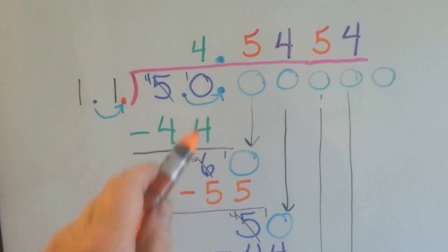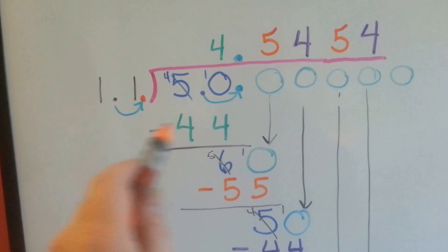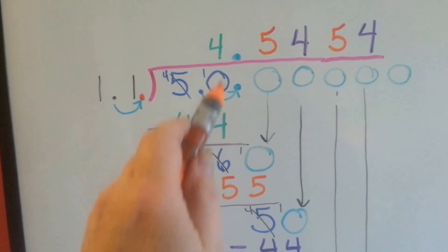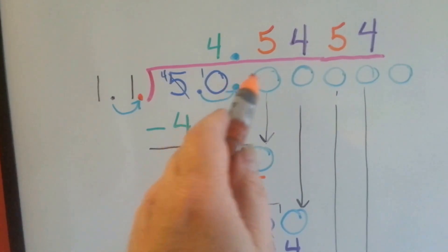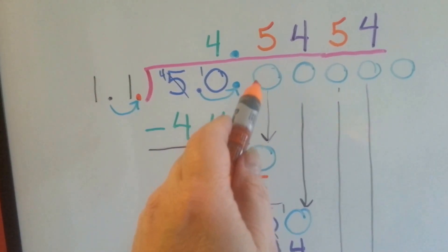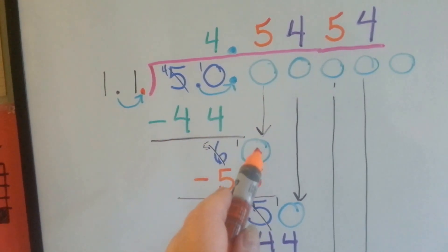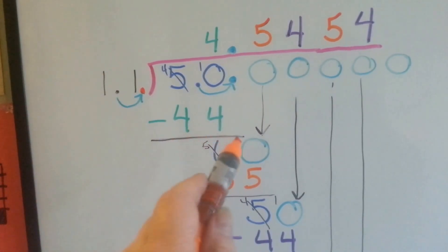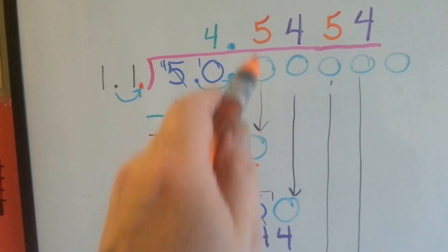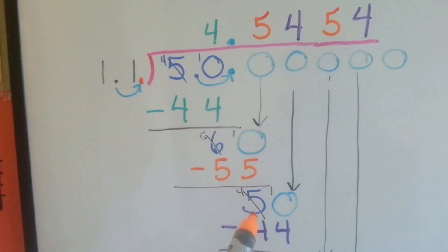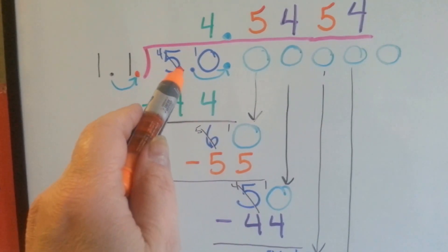Now I've got 11 fitting into 50. 11 can go into 50 four times because 11 times 4 is 44. I put my 44, did my subtraction, and got a 6. Because I ran out of digits, I had to add a 0, which is okay on the right side of a decimal point. So I added the 0, brought it down, and now 11 can fit into 60 five times because that's 55. So I put the 5 up there, did my subtraction, and got a 5.